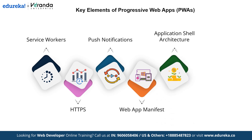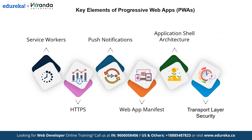The next one is Application Shell Architecture. This provides the foundation for building a fast and reliable progressive web app by separating the shell of the app from the dynamic content, giving users quicker load times. The next one is Transport Layer Security - an additional layer of security that ensures all data transferred between the user and the application remains private and intact. So these elements work together to create a seamless, secure and engaging user experience, setting progressive web apps apart as the future of web applications.